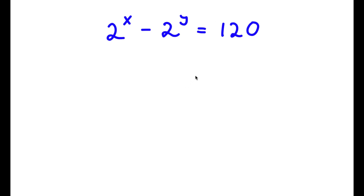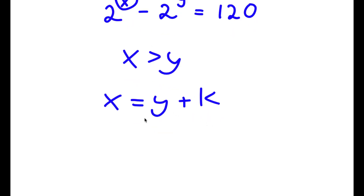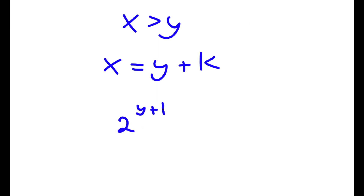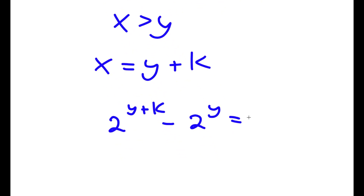In this problem, I have 2 to the power of x minus 2 to the power of y is equal to 120. At first glance, we can already tell that 2 to the power of x is greater than 2 to the power of y, because the result is a positive number, meaning x is greater than y. Because we know that x is greater than y, we can say that x is equal to y plus some variable k. Now I'm going to replace x with y plus k, so I have 2 to the power of y plus k minus 2 to the power of y is equal to 120.